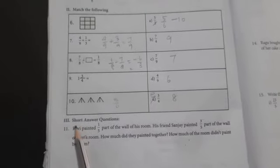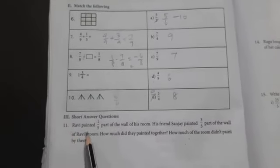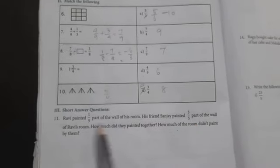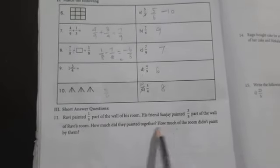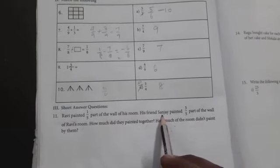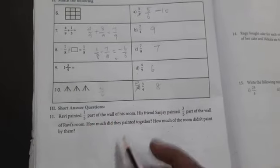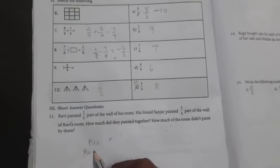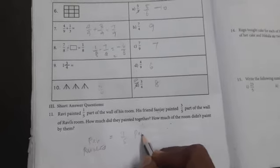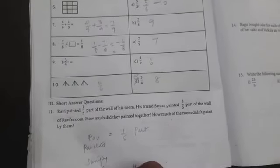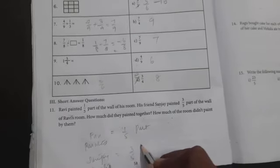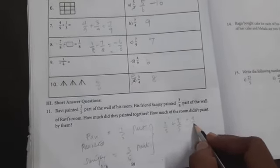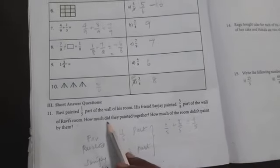Roman number three, short answer questions. Question 11: Ravi painted one by five part of the wall of his room. His friend Sanjay painted three by five part of the wall of Ravi's room. How much did they paint together? So two people painted one room. Total painted: Ravi painted one by five parts of the wall, Sanjay painted three by five parts. Total equals one by five plus three by five equals four by five.